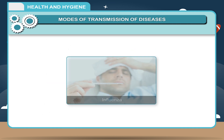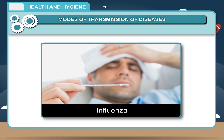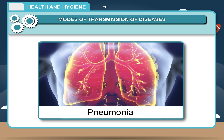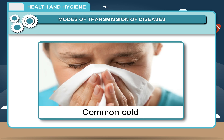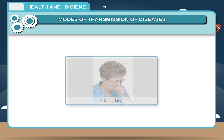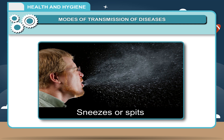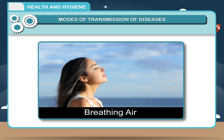Air: Diseases like influenza, pneumonia, chicken pox and common cold spread through air. When a person infected with one of these diseases coughs, sneezes or spits, disease-causing microbes come out of the body and spread in the air. On breathing this air, a healthy person may be infected by the disease.